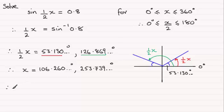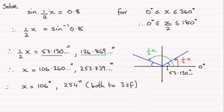Don't forget we need to give these answers to three significant figures. So x would be equal to 106 degrees. And for the other one this would be 254 degrees. And I'll just say that both are given to three significant figures, 3SF for short. Okay.